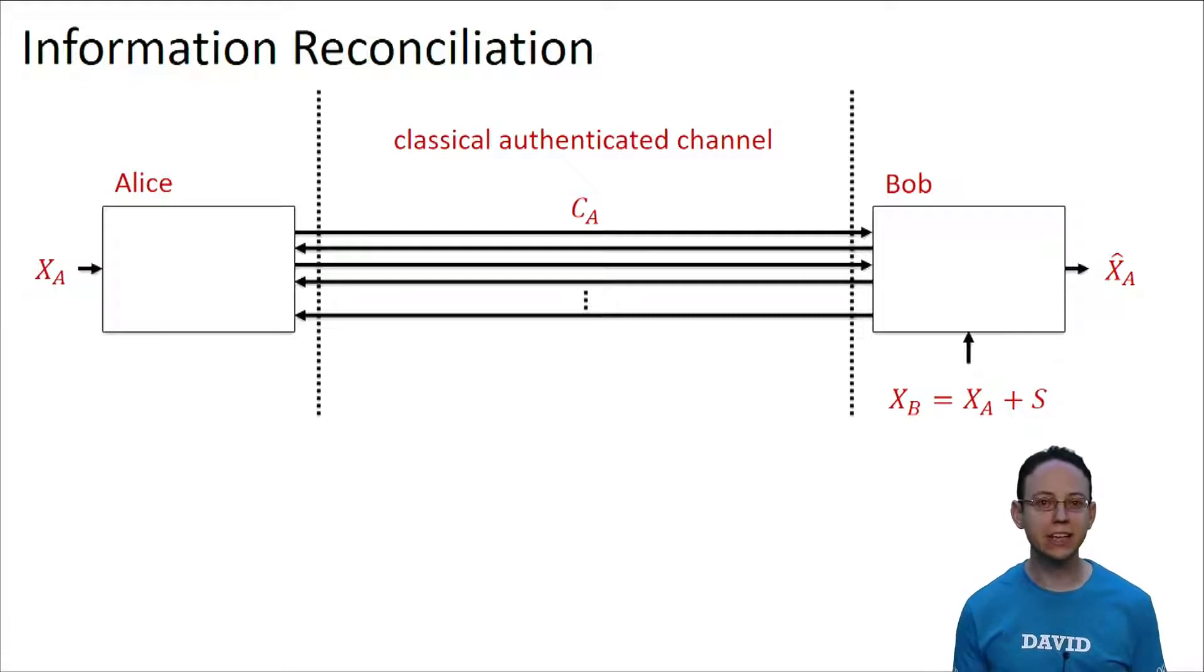How can we deal with this problem? The main idea is to perform error correction. To this end, Alice and Bob need to perform one additional step before privacy amplification. This step is called information reconciliation. In the information reconciliation step, Alice and Bob will exchange error correcting information to correct errors. We will, in the following, learn how to do information reconciliation.